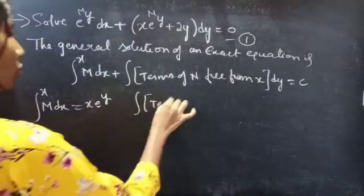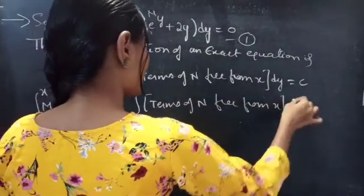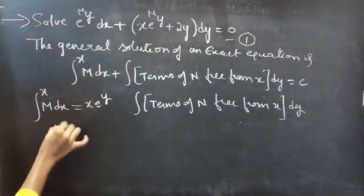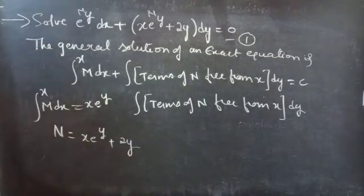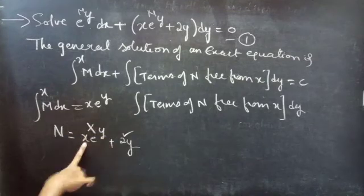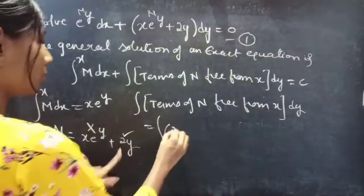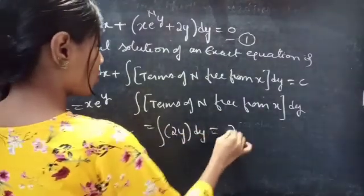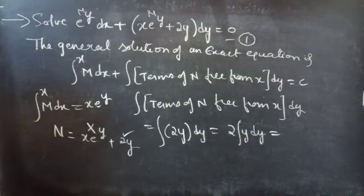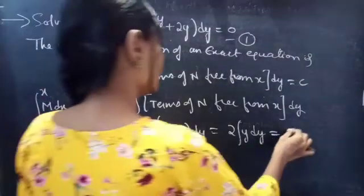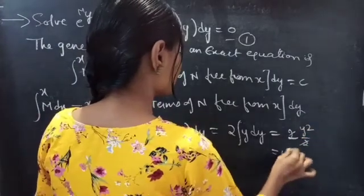For the second integral: integral of terms of N free from x into dy. We have N equals x into e power y plus 2y. The term which does not involve x is 2y, so we take only 2y. This equals integral of 2y dy, which equals 2 times y squared by 2. The 2 gets cancelled, giving y squared.